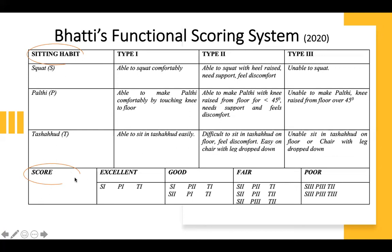The scores are divided into four categories: excellent, good, fair, and poor. Excellent is when all three positions fall into type 1. Good is when any one of the three positions falls into type 2. Fair is when two out of three positions fall into type 2, or any one position falls into type 3. Poor is when two out of three positions fall into type 3, or all three positions fall into type 3.